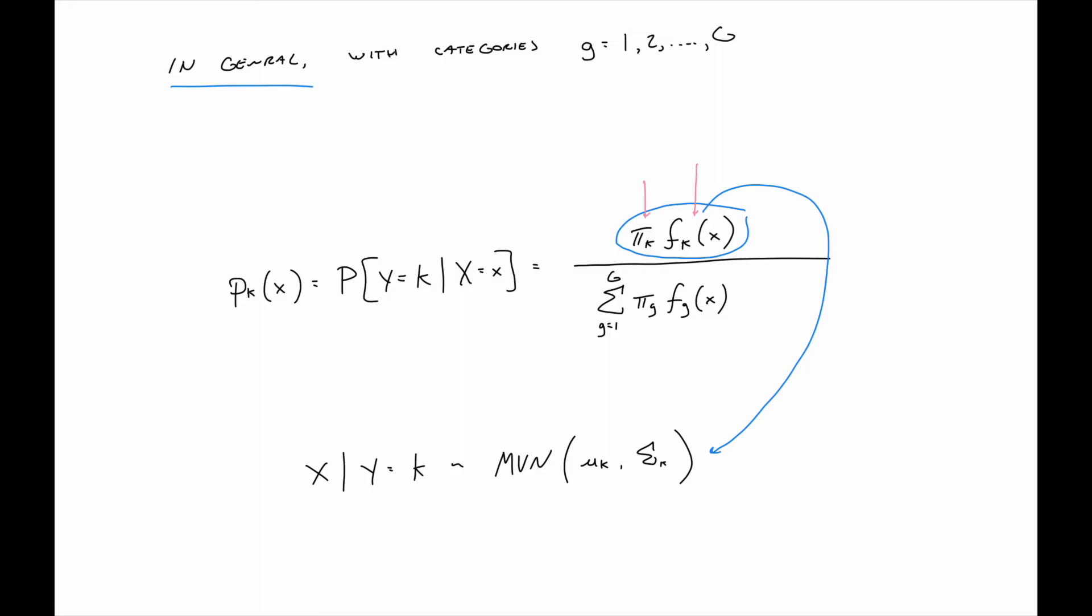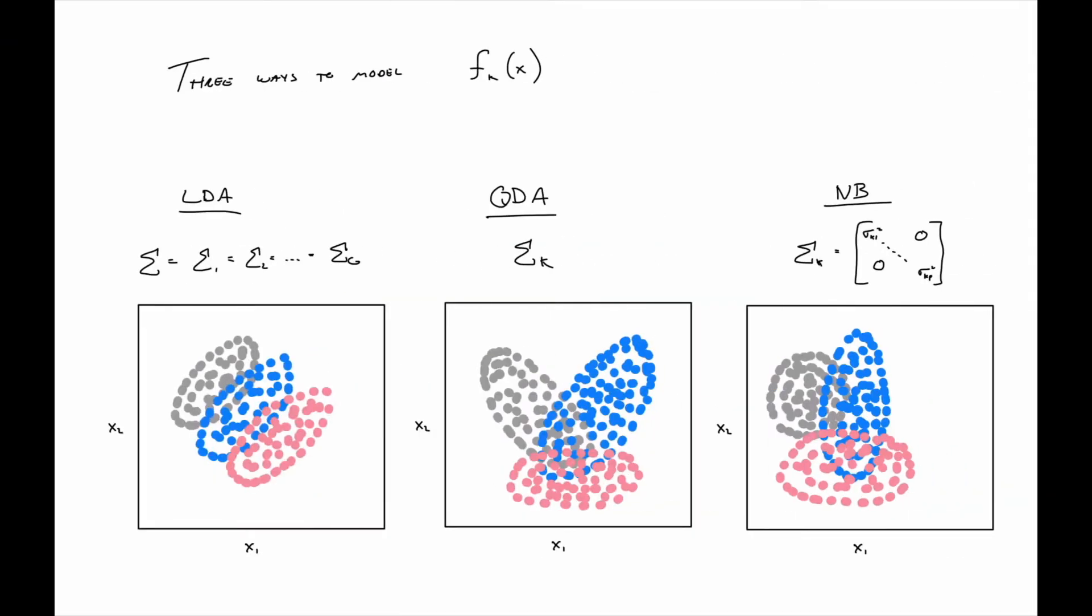So now we want to think about learning this f sub k here and in particular using multivariate normal to do it. But we're going to talk about three different ways to do that. And the way that these will be different is that we're going to put different restrictions on what that shape matrix, that shape parameter, the variance matrix here, will look like for the three different methods.